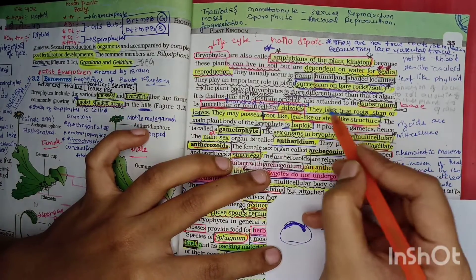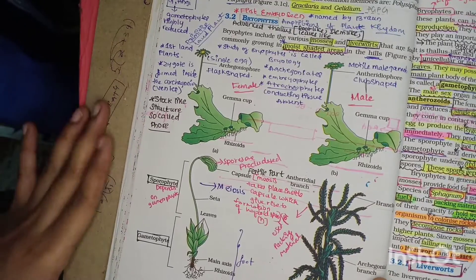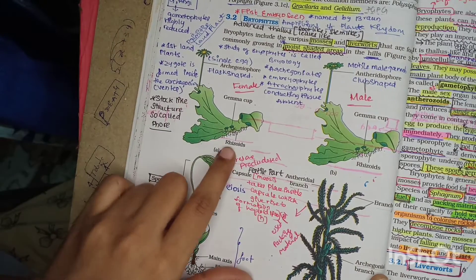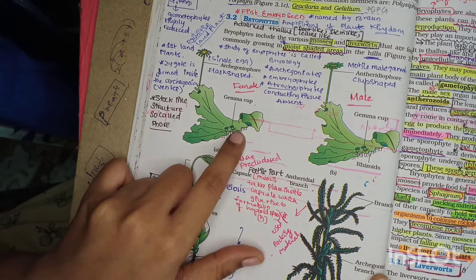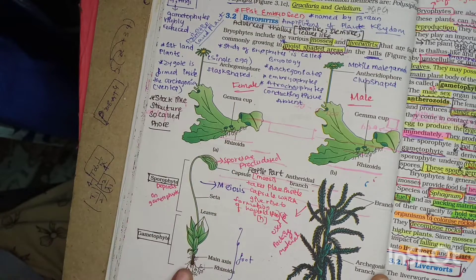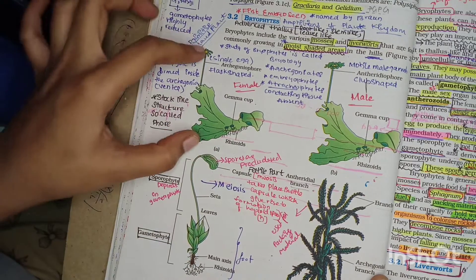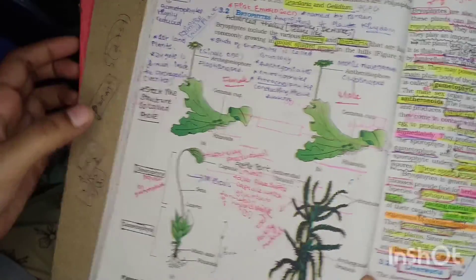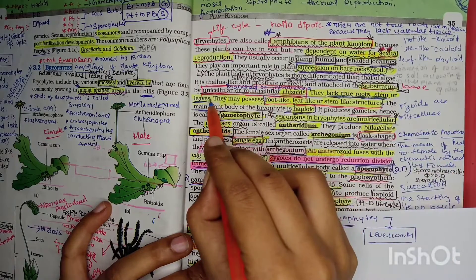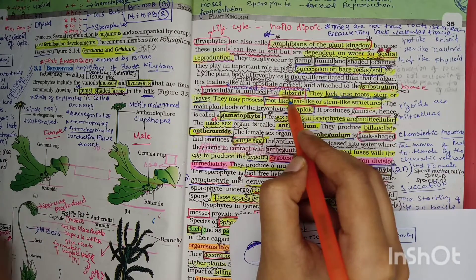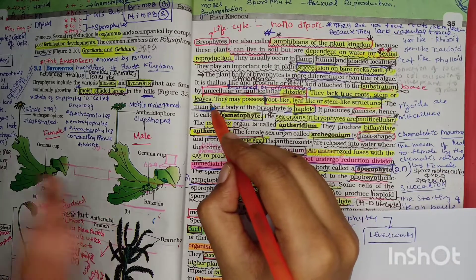Bryophytes are attached to the substratum by unicellular or multicellular rhizoids. Some are directly attached to the rock while others grow to some height. The rhizoids may be either multicellular or unicellular. Bryophytes lack true root, stem, or leaves.